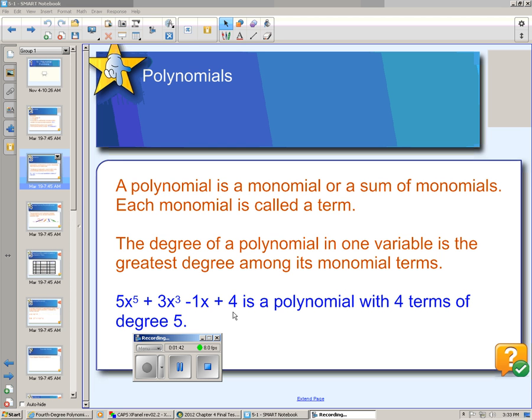The degree of the polynomial, if there is only one variable like this one, just x's, no y's, is the degree on the highest term. So this term, the first term here, has a fifth degree to the fifth power, so this makes the entire polynomial a fifth degree polynomial.